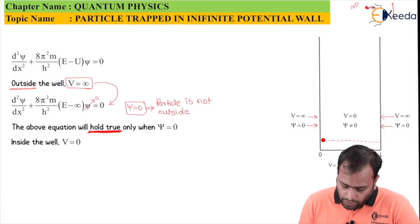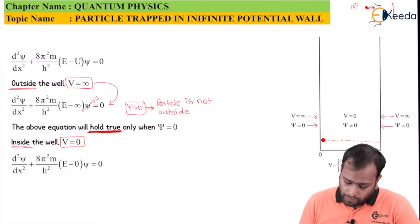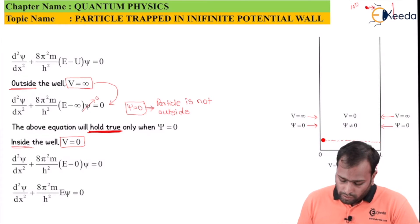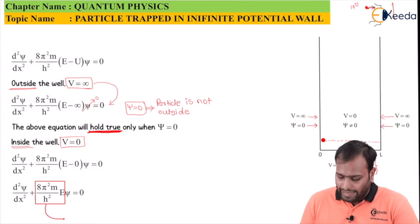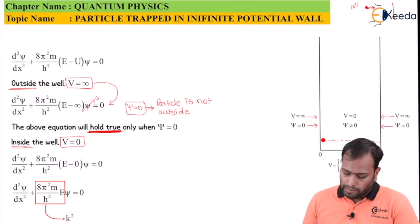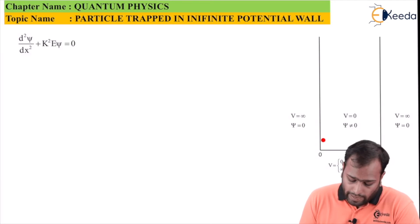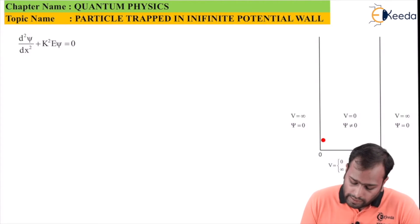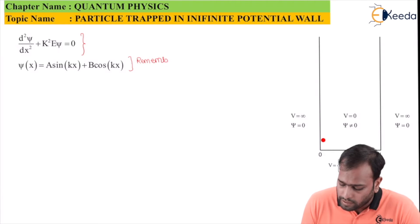Inside the well, V = 0. Substituting V = 0 into the equation, we get d²ψ/dx² + (8π²m/h²)·E·ψ = 0. We define k² = 8π²mE/h² for simplification, giving us d²ψ/dx² + k²ψ = 0. This is a second-order derivative, whose solution is always of the form ψ = A sin(kx) + B cos(kx) — a sum of sine and cosine terms.